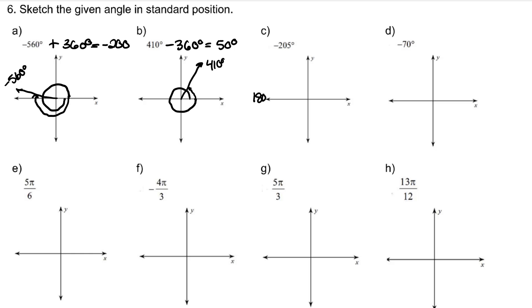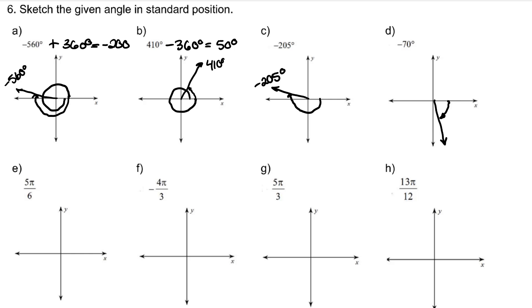For negative 205 degrees, since 180 is equidistant from the initial position, go past negative 180 by 25 degrees. For negative 70 degrees: a right angle is negative 90 going down from the initial side, so negative 70 would be 7/9 of that distance. For 5 pi over 6 — pi is 6 pi over 6 — so 5 pi over 6 is 1 pi sixth short of a half circle of 180 degrees.